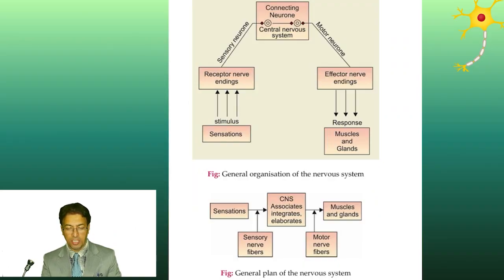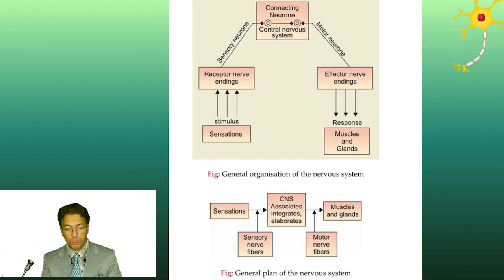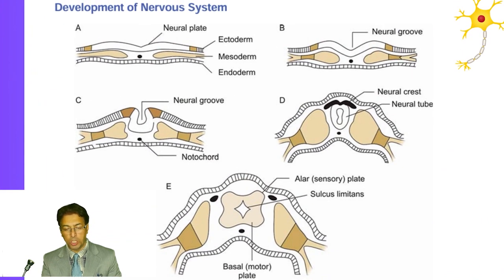As far as the general organization of the nervous system is concerned, we are well aware of the sensory nervous system, the motor nervous system, and the integration at the highest level by the cerebrum, cerebellum, and some cranial nuclei. This chart beautifully depicts the general organization of the nervous system, but more important than that is how the nervous system develops.